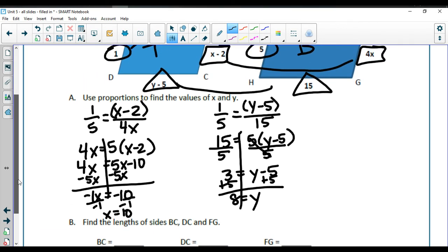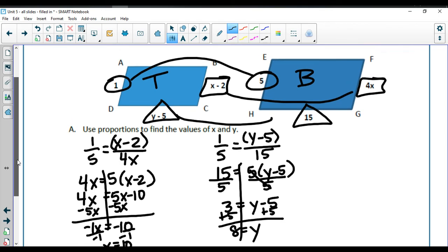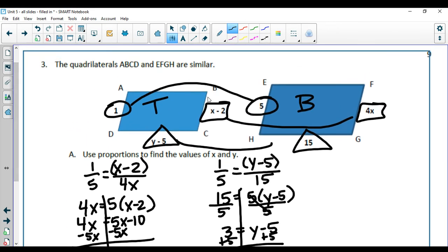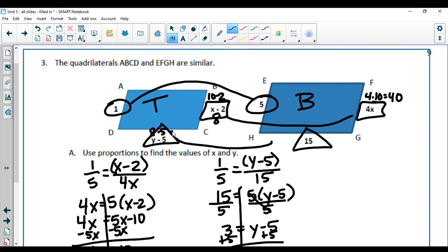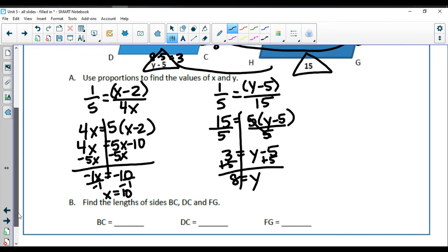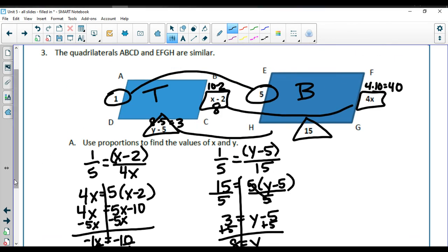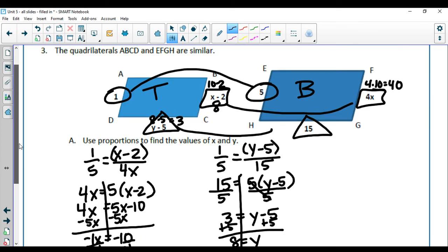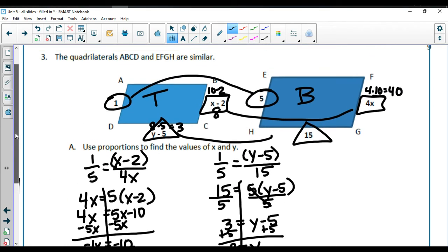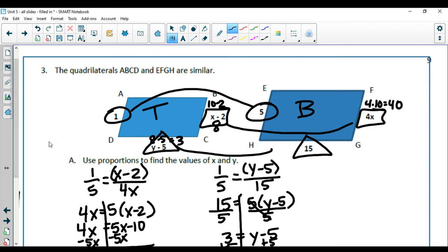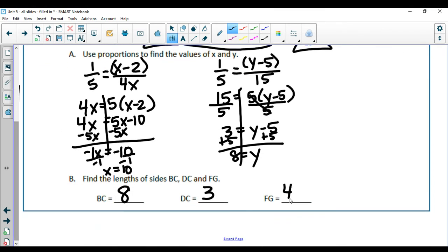So to be able to go back and plug those in: I have x is 10, so 10 minus 2 is 8. And x is 10, 4 times 10 which is 40. And for my y's, I have 8 is y, so 8 minus 5 which is 3 over here. So BC is right along the right side here, that's an 8. DC is right along the bottom, which we just said was a 3. And FG is right down here on the right side, which is a 40.